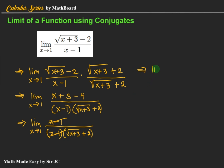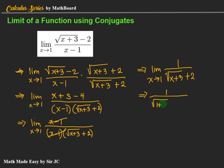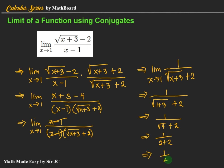We now have the limit of 1 / (√(x + 3) + 2) as x approaches 1. By substitution, that is 1 / (√(1 + 3) + 2) = 1 / (√4 + 2) = 1 / (2 + 2). The final answer is 1/4.